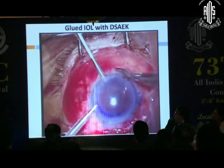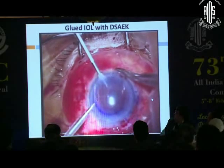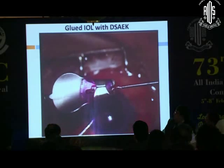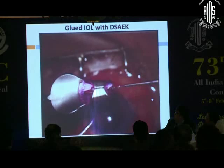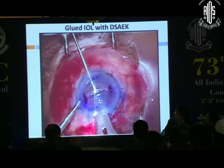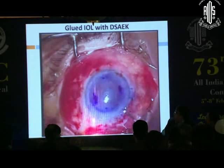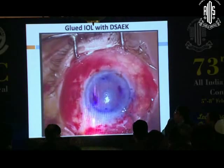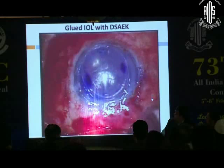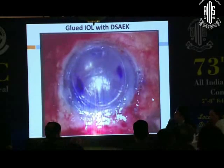Then it is time to place the donor lenticule. The fashioned donor lenticule is loaded on a Busin glide and is being pulled. The Busin glide is placed temporarily and from the nasal side the donor lenticule is pulled in. This is the end of the surgery.